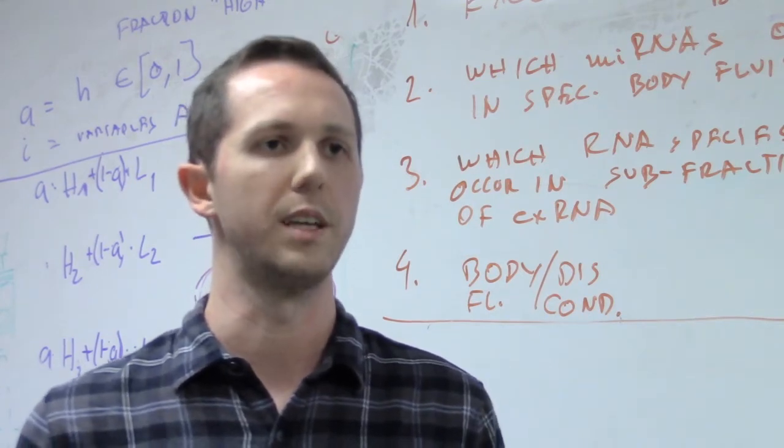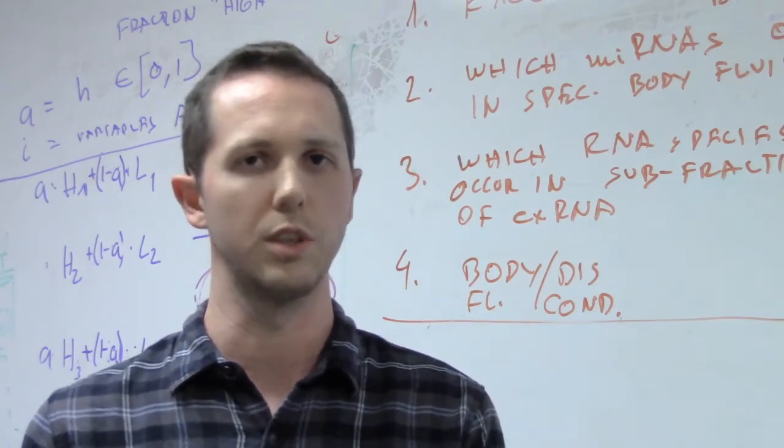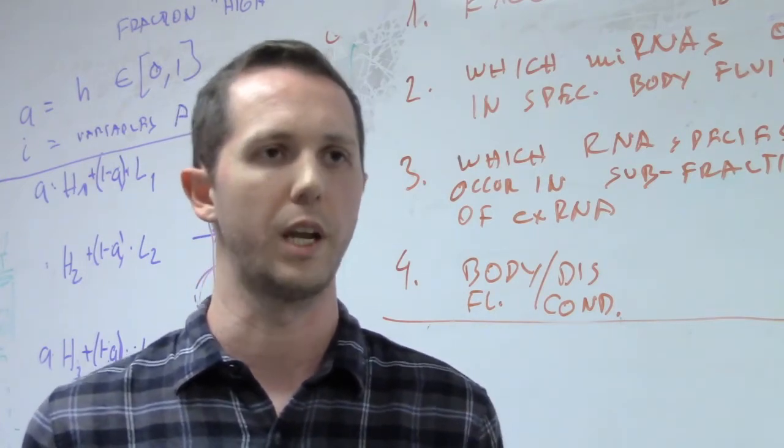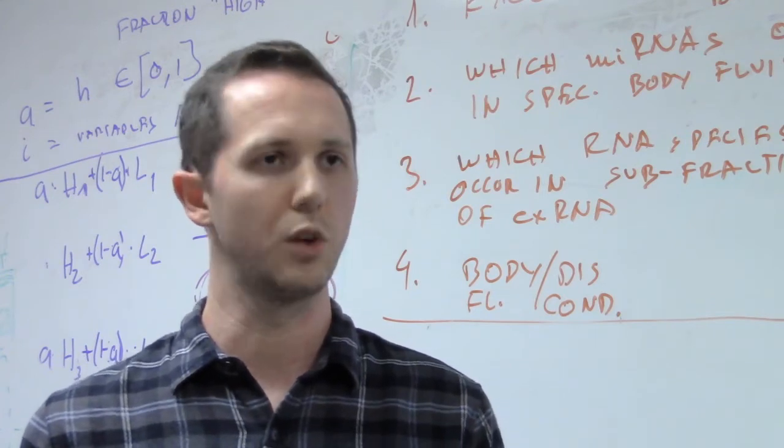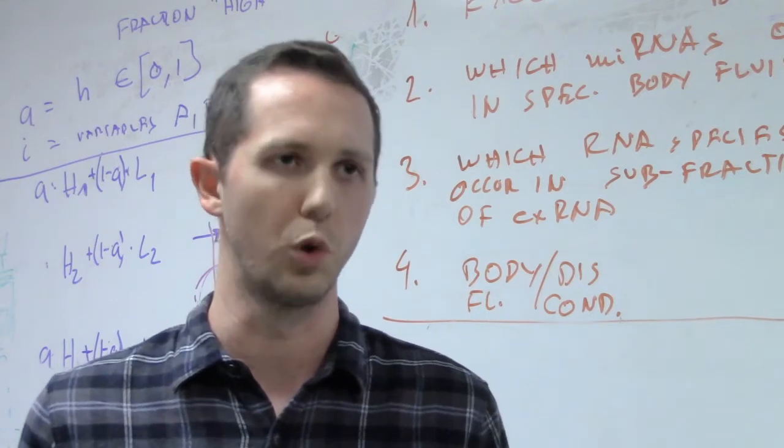We looked, for example, at the interactions between stromal cells and epithelial cells. Epithelial cells in the breast tumors are the actual cancerous cells. And these cells appear to be feeding off of the cells that are part of the stroma of the tumor.